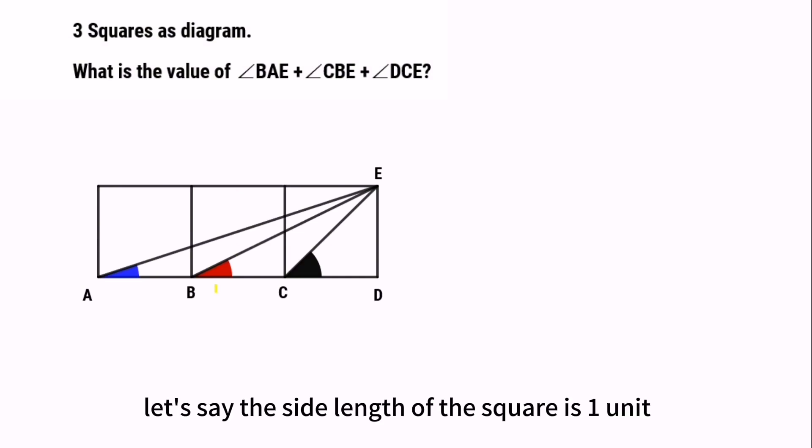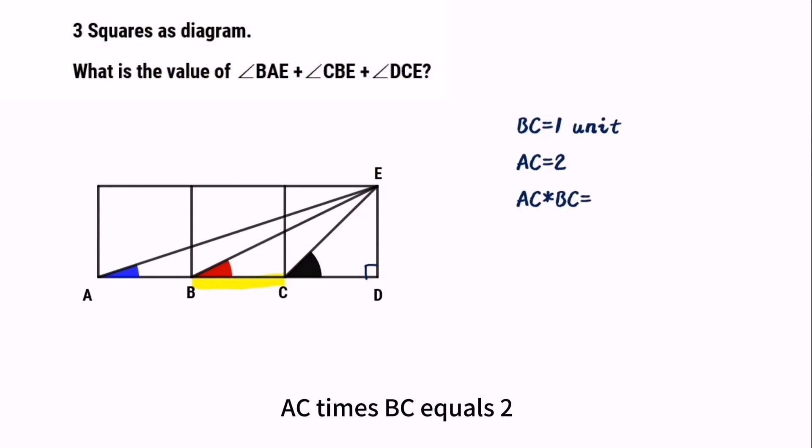Let's say the size of the square is one unit, so BC equals one unit. We can also get AC equals two units. Now, we can get AC times BC equals two. Then,